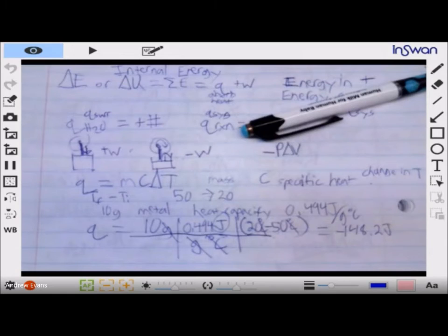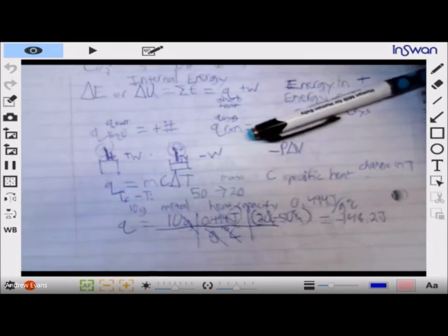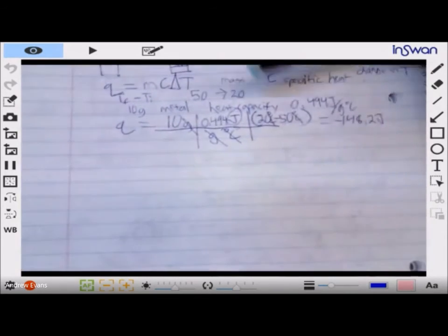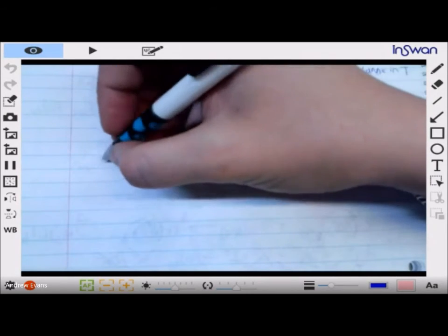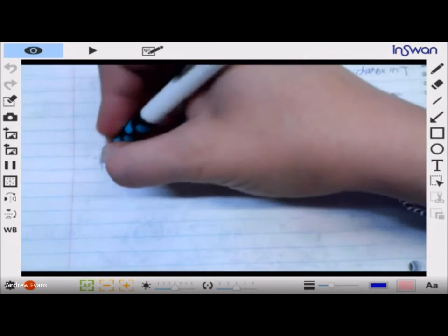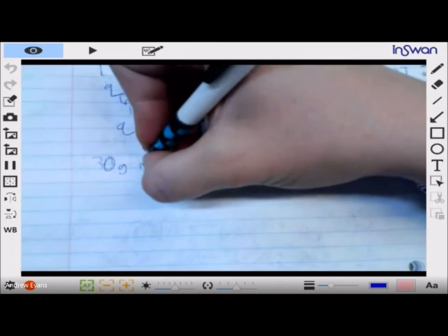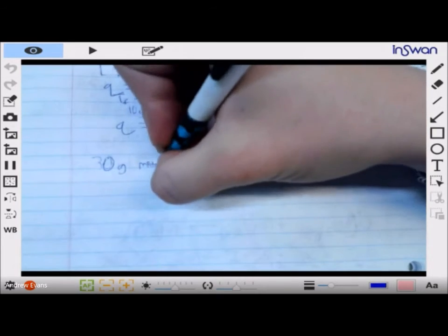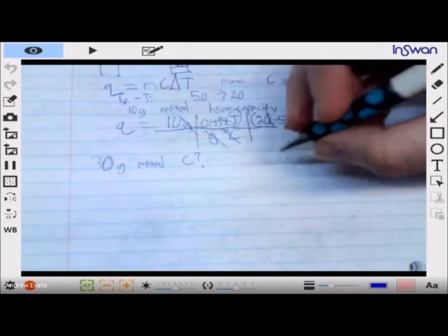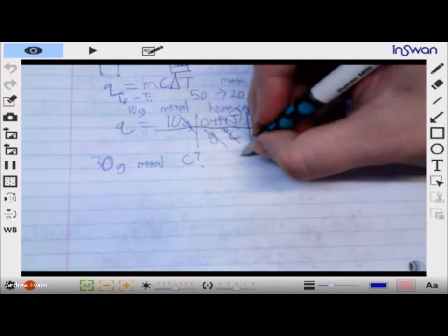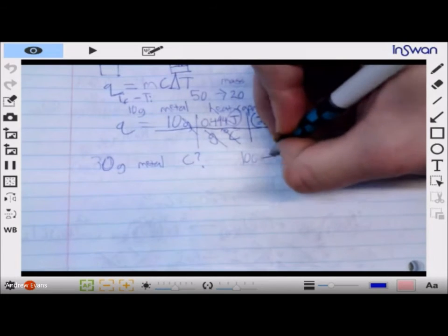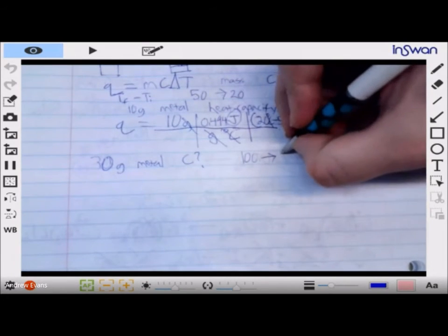But that is real quick how do we do q. The worst case, let's do one more problem. Worst case is you have two situations where you're looking at, let's say, 30 grams of the metal with unknown heat capacity c - we don't know - and it goes from let's say 100 down to 39.